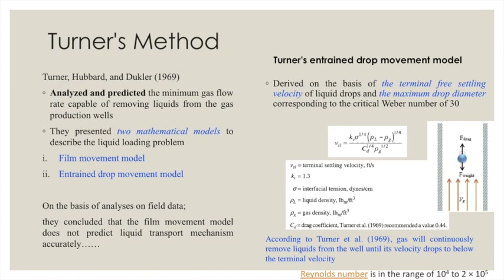The Turner entrainment drop movement model is derived based on terminal free settling velocity — similar to the critical velocity used in separator design. As shown in the diagram, there is a gas velocity with a drag force acting upward and a gravity force acting downward. When these two forces balance, we have the terminal velocity vsl. This terminal velocity is derived from the condition that drag force equals gravity force, and this settling velocity is found using the corresponding relationship.